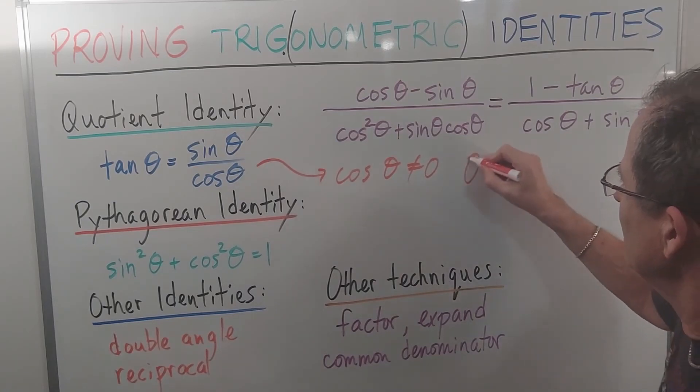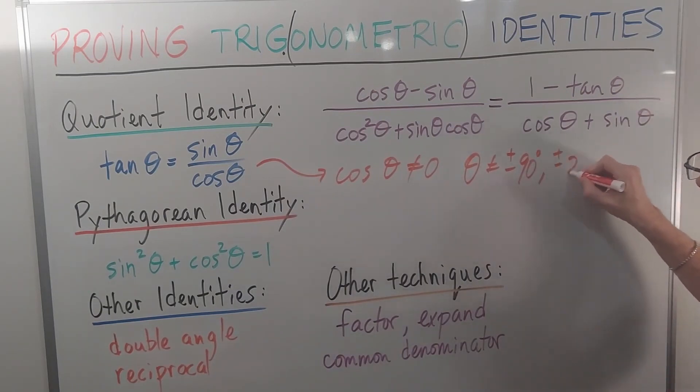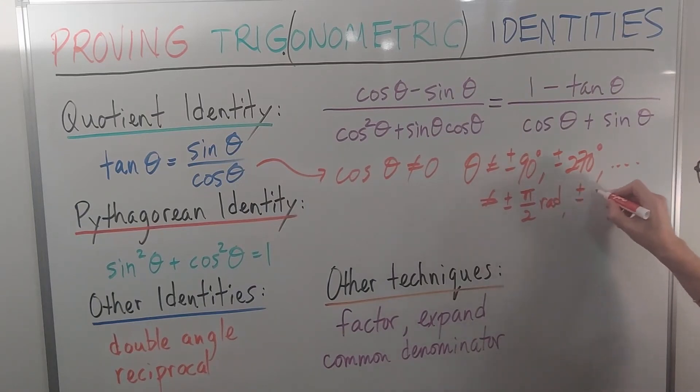That means that θ cannot be plus or minus 90 degrees, plus or minus 270 degrees, and so on. Or in radians, it can't be plus or minus π/2 radians, plus or minus 3π/2 radians, etc.